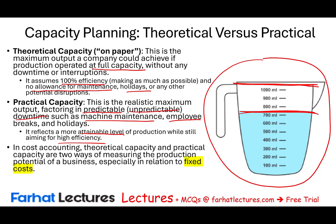In cost accounting, when we refer to capacity — whether it's practical or theoretical — what we are really measuring is the production potential of a business in relationship to fixed cost. For a manufacturing company, capacity refers to the fixed cost: the manufacturing equipment and the manufacturing plant. We'll illustrate this further with a more realistic example of a car manufacturing plant.